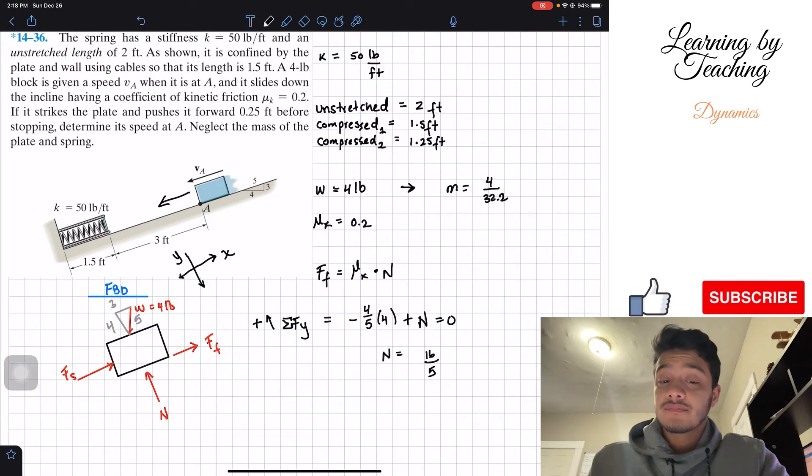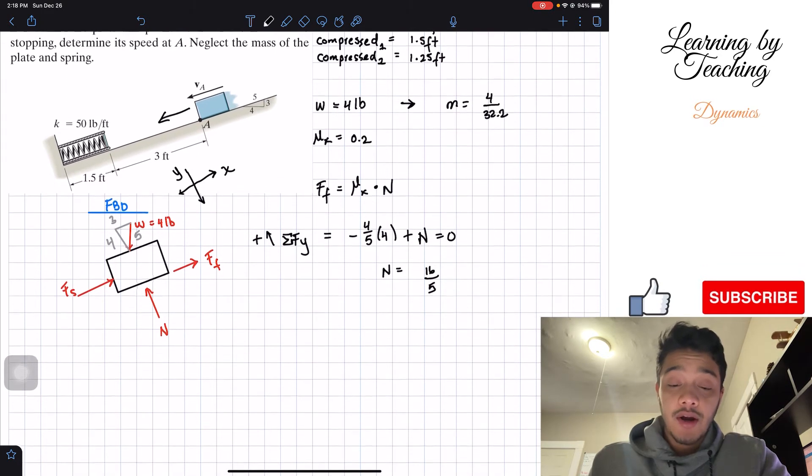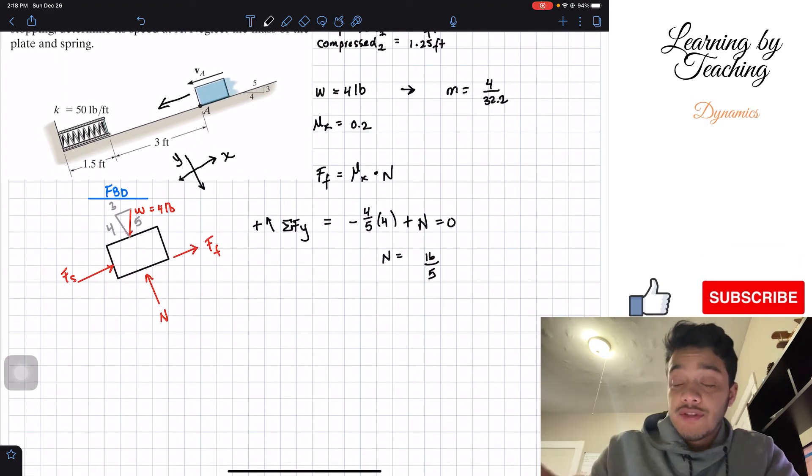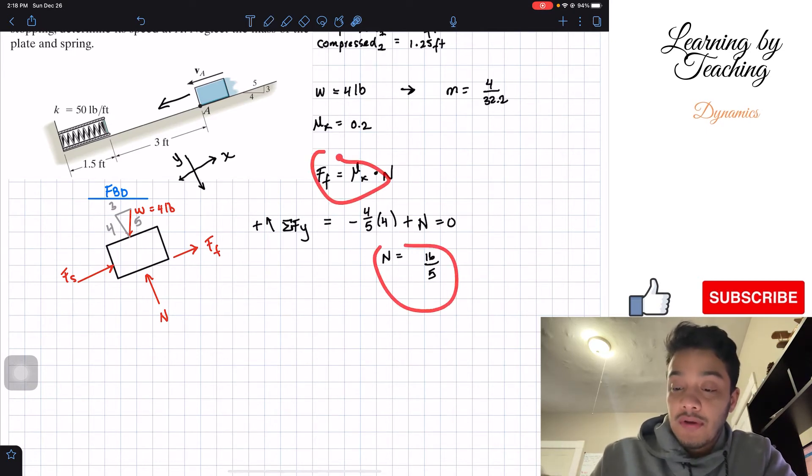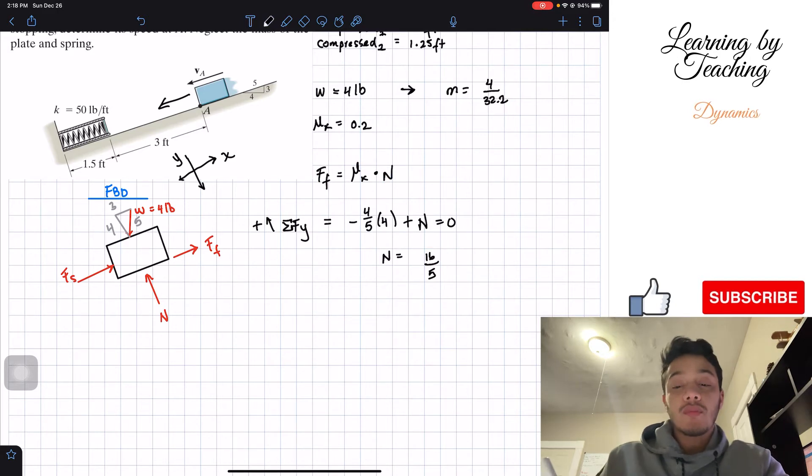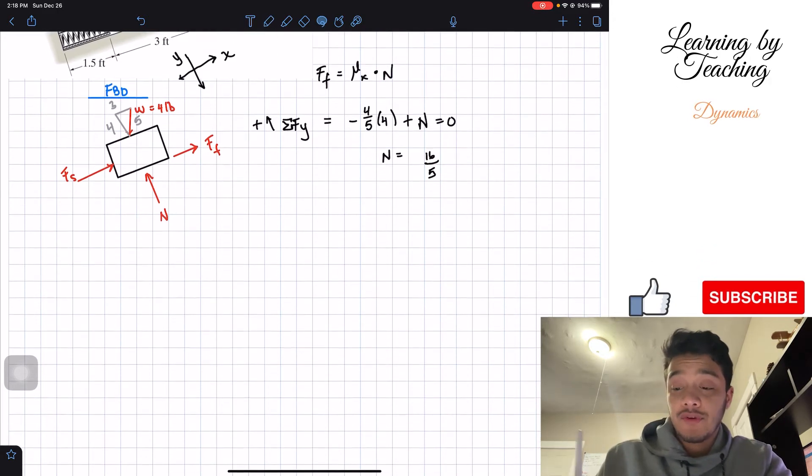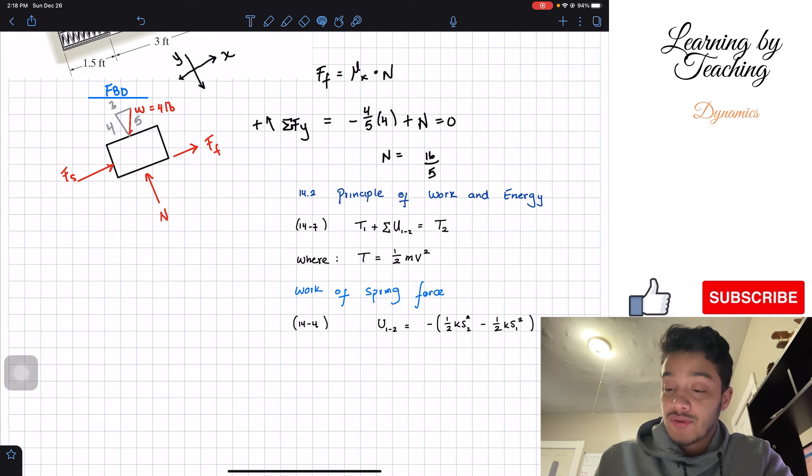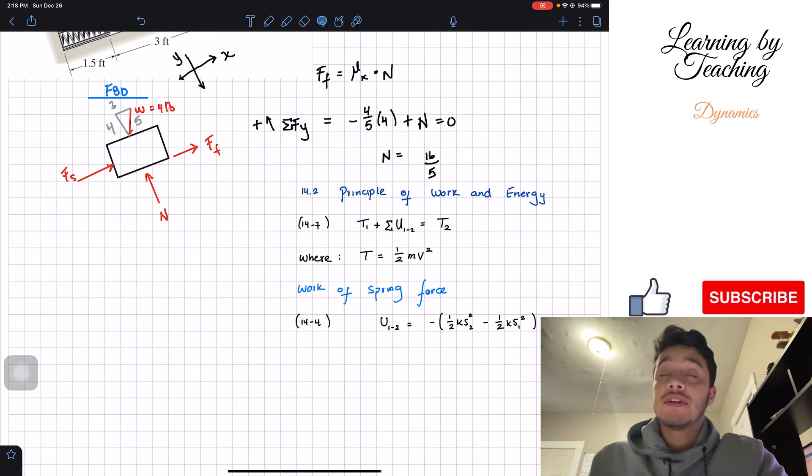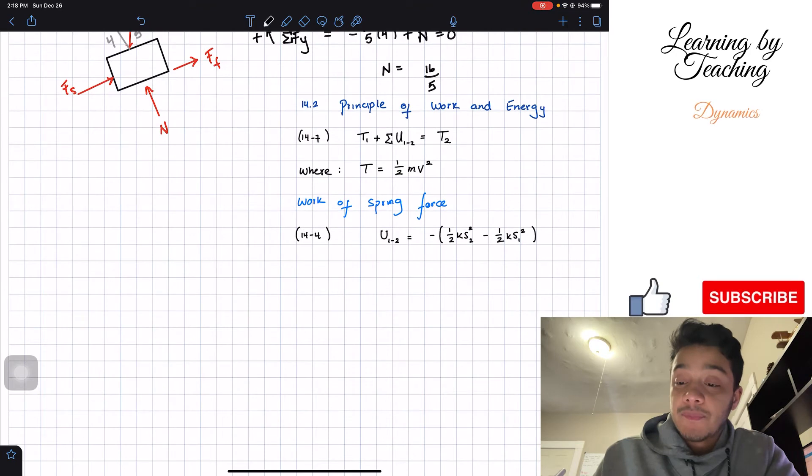Alright. So after we're done basically with this free body diagram, we know all the forces, since we know also N, we will also know my friction. What we are going to do is we utilize chapter 14 equations. So basically we're going to utilize the principle of work and energy equation in order to find our velocity. And since the principle of work needs the summation of works, we're going to utilize the work of a spring force, since we have a spring in our system.